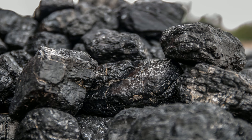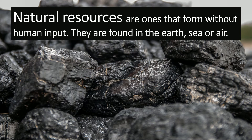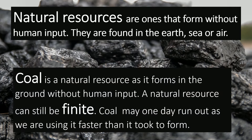Some resources can also be classed as natural resources. These are ones that form without human input and are found either in the earth, in the sea, or in the air. A good example is coal — it's a natural resource because it formed over millions of years in the ground without any human input. However, a natural resource can still be finite; in the case of coal, we may one day run out as we're using it faster than it took to form, but it is still classed as a natural resource.